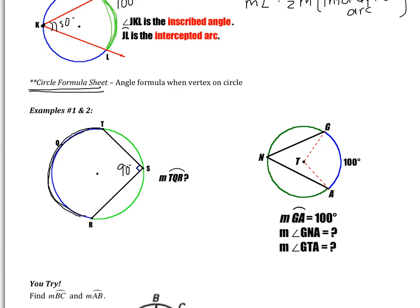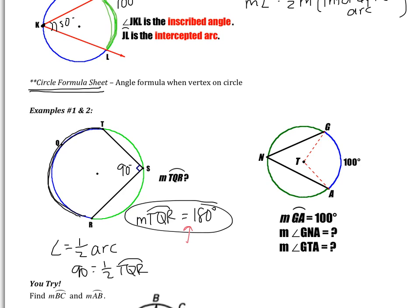We know that the angle is 90, and the angle is going to be one half of the arc. So 90 is one half of arc TQR. If I multiply both sides by two, I get the measure of TQR to be 180 degrees. Just a little fun fact, 180. What's special about that? Hopefully you remember that means that we have a semicircle. So TQR is actually a semicircle.